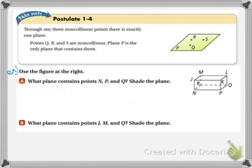Okay, let's move on to the last postulate for this section, which is 1-4. And it tells us that through any three non-collinear points, there is exactly one plane. Okay? So through any three points that are not on the same line, there's only one plane. Alright, so let's look at a problem to try to do this.